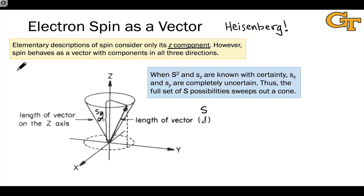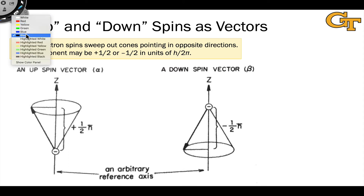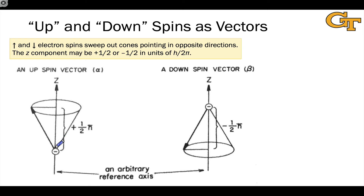We've taken the basic model of an up-spin electron — where all we pay attention to is s_z — and transformed it into three dimensions, appreciating that the x and y components are completely unknown when we have knowledge of the total spin length. When we talk about up-spins and down-spins, those cones point in opposite directions: the up-spin has z component +½ħ, and the down-spin has z component −½ħ. Each sweeps out a cone, just pointing in different directions along the z-axis. The symbols α and β represent these up- and down-spin wave functions.